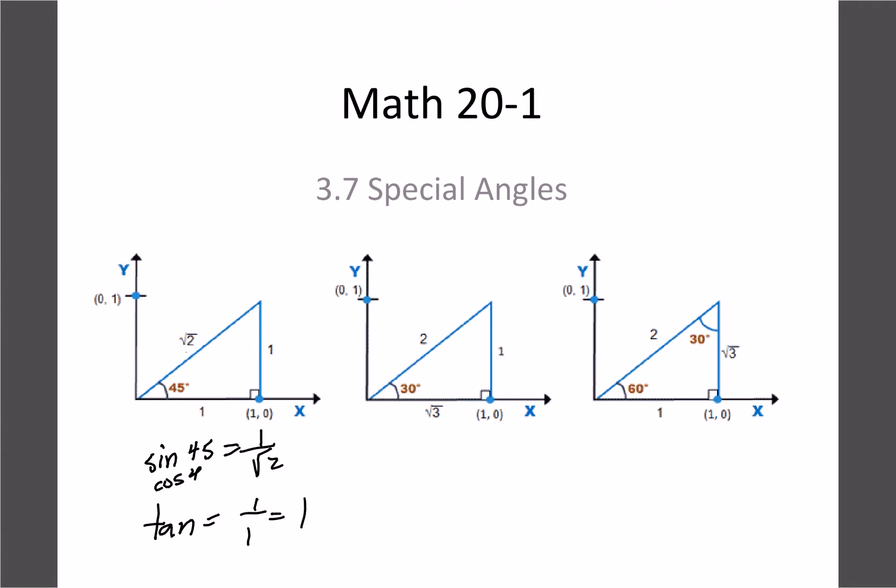So sine and cosine are both the same. And when we did 30 and 60, remember we saw that sine of 30 was 1 half, and cosine of 60 was 1 half, because they were just opposite triangles of each other. And then cosine of 30 was root 3 over 2, and sine of 60 is root 3 over 2. So those also matched. And then our last one was tan of 30 is 1 over root 3, and tan of 60 is root 3 over 1. So those just were reversed of each other as well.